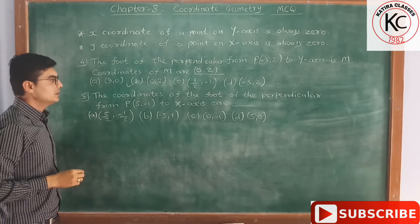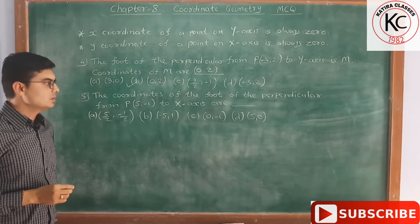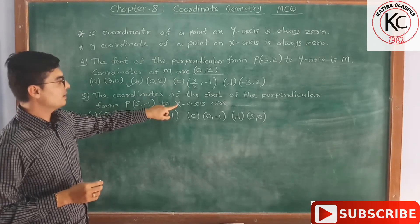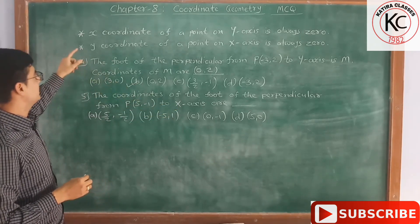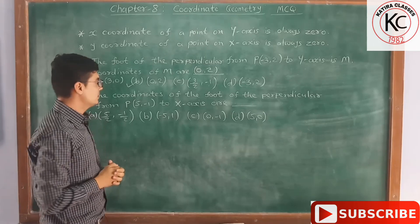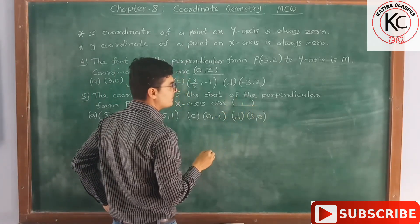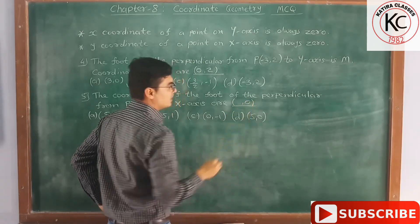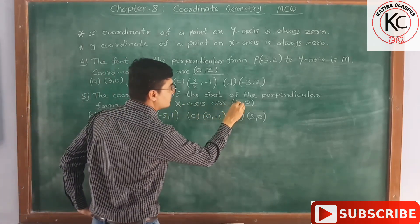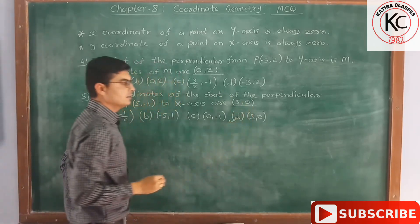The 5th MCQ: the coordinates of the foot of the perpendicular from point P to the x-axis are dash. Here the point is on the x-axis. So as per the second rule, the y-coordinate of a point on the x-axis is always 0. So here y-coordinate becomes 0, and the x-coordinate remains as it is, which is 5. So the correct option is D: (5, 0).